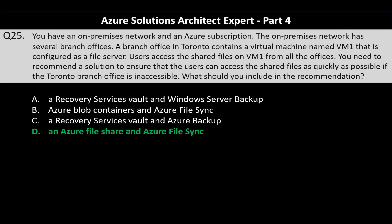Azure File Share provides a cloud-based SMB file share that can be mounted to any office, ensuring fast access to files even if the original on-prem VM is unavailable. Azure File Sync allows you to centralize your file share in Azure and sync files from your on-premise VM to an Azure file share. If the Toronto branch office is inaccessible, users can access the files directly from the Azure file share without interruption.